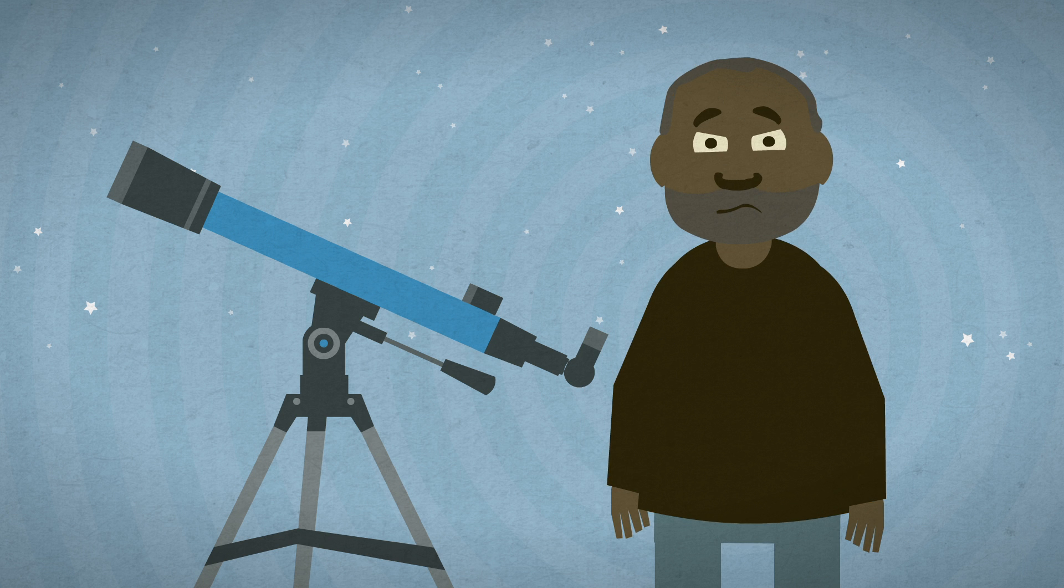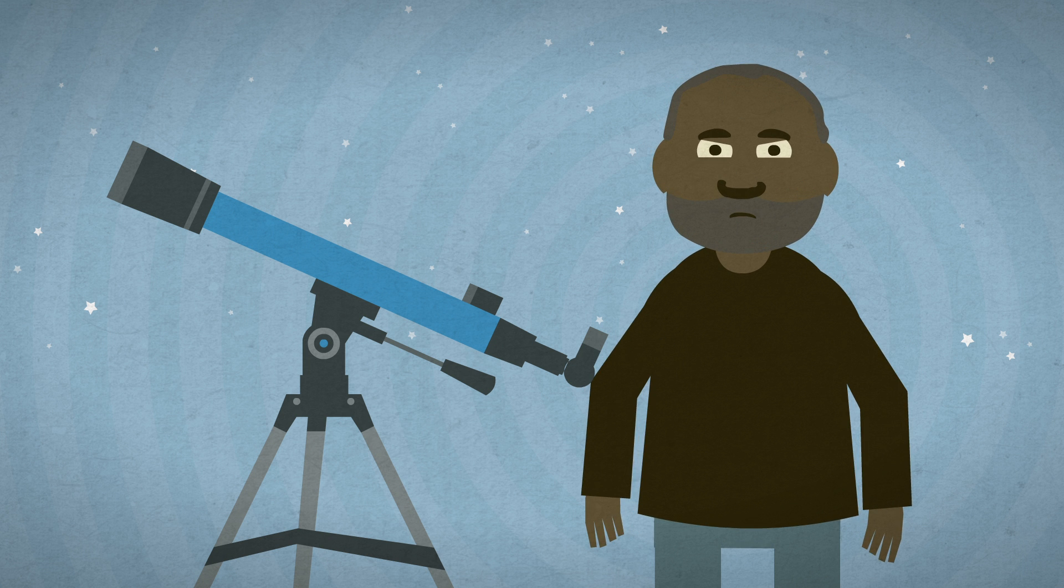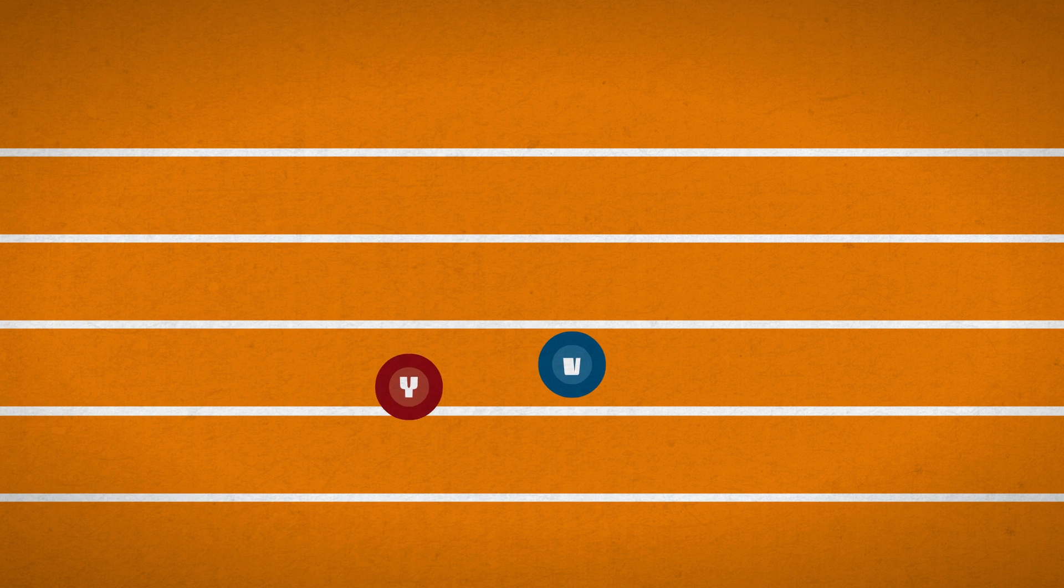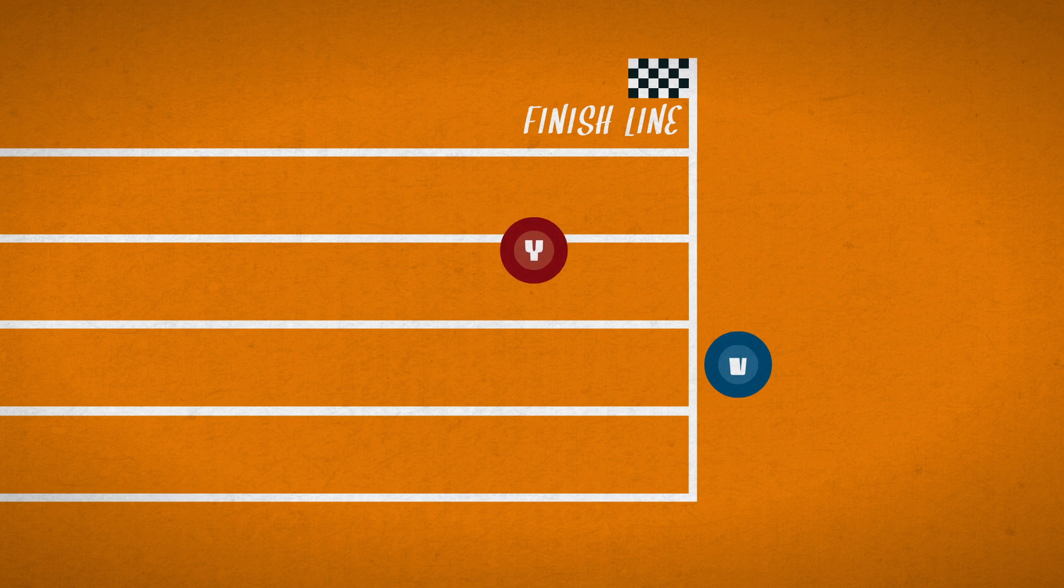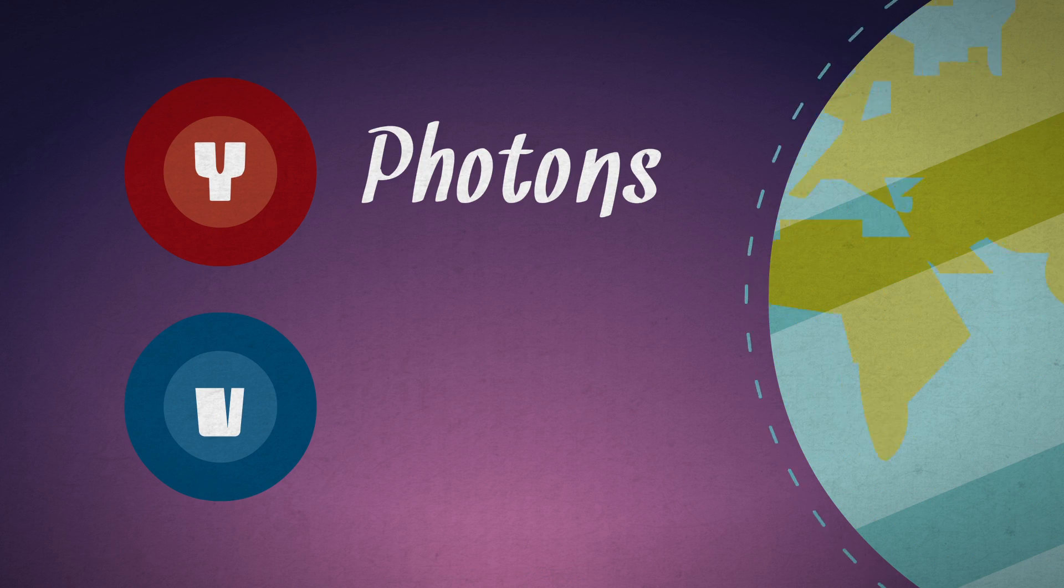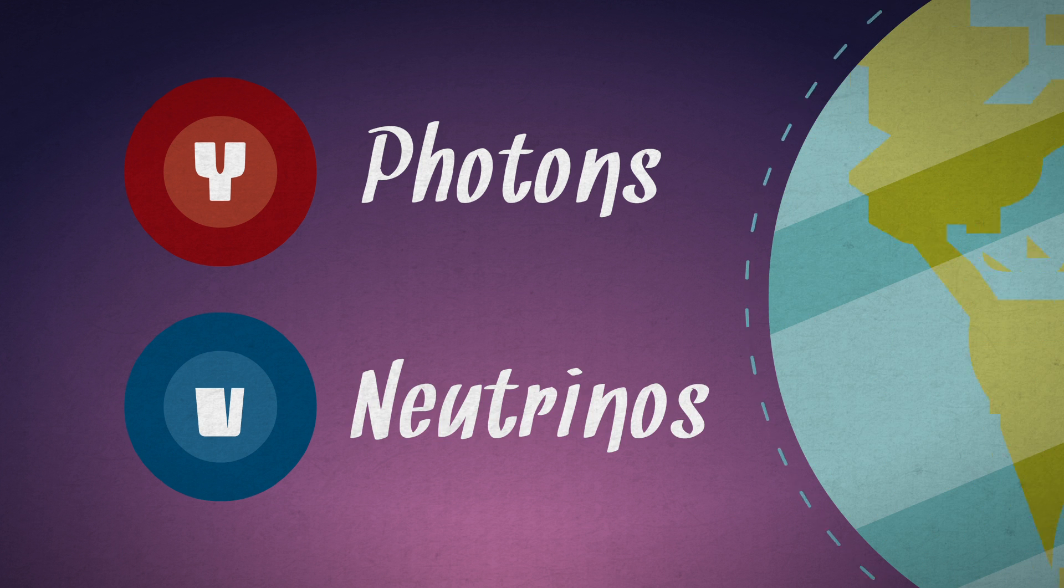That may seem impossible. After all, nothing travels faster than the speed of light, right? As far as we know, yes. But in a race, fast doesn't matter if you take a detour while someone else beelines it for the finish line. For exactly that reason, photons don't win the supernova race to Earth. Neutrinos do.